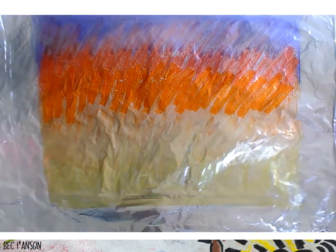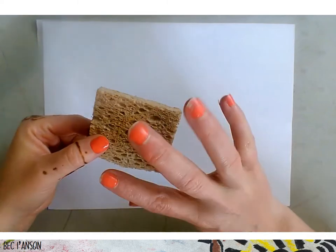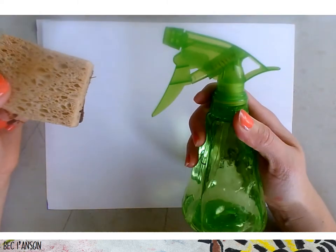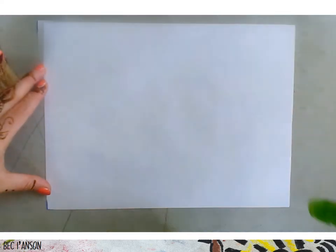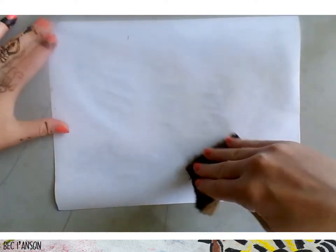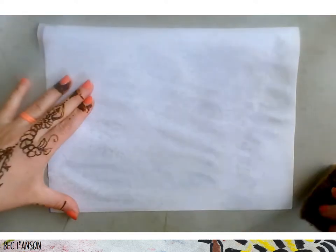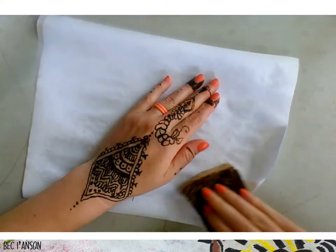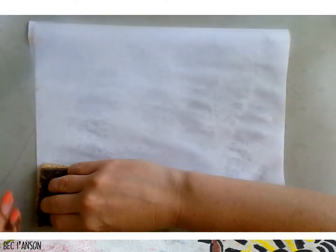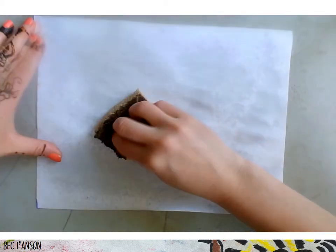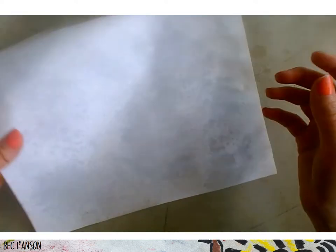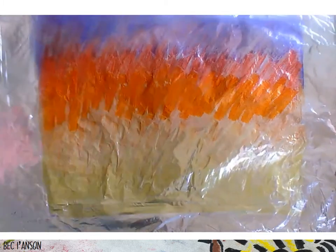We're going to move this out of the way and grab your paper — this is where we use the water on a sponge or a paintbrush. I'm going to use a spray bottle; if you don't have one you can just dip a sponge in a cup of water. I'm going to spritz my paper to evenly cover it with some water, then use my sponge to make sure it's all evenly wet across the whole paper.